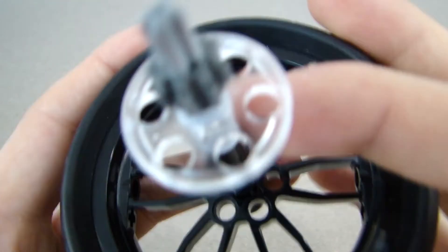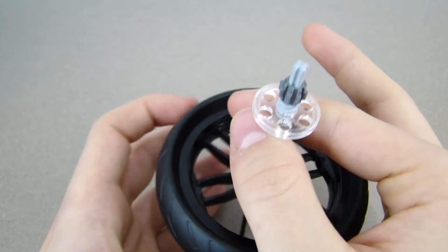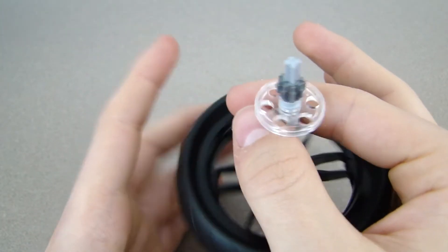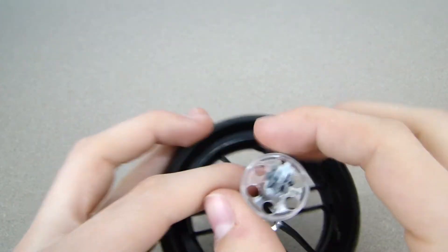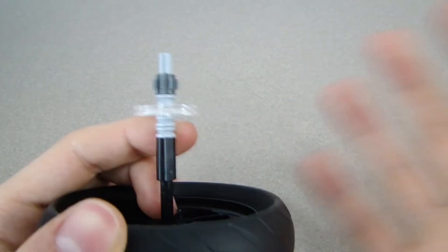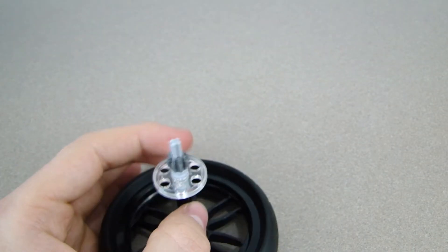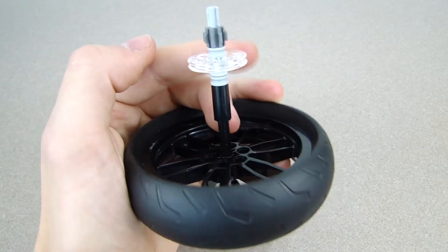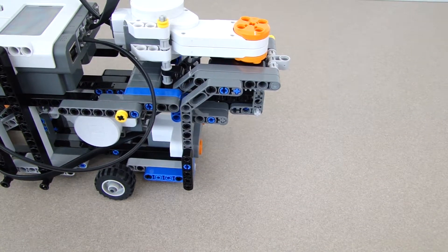This little piece right here is what the machine holds it up with and spins it and then drops it from. So that's what that piece is. And then the gear, of course, to spin it. But that's what the top is made out of.